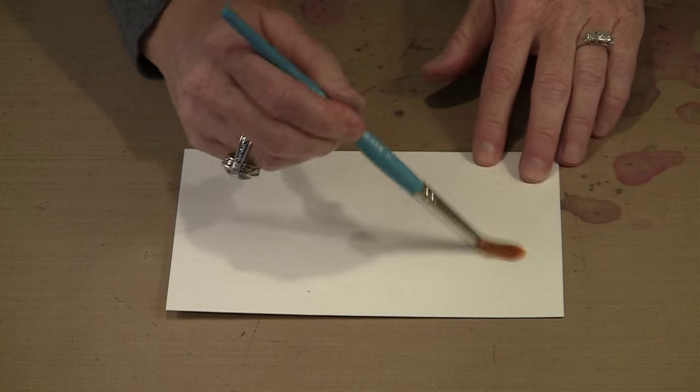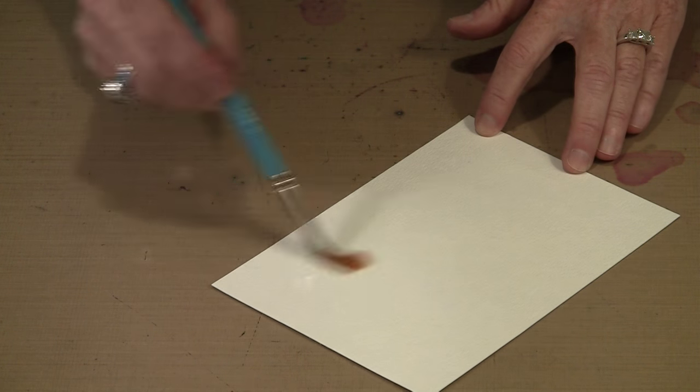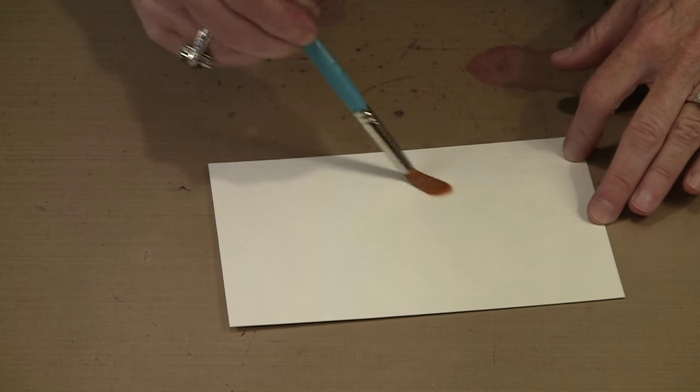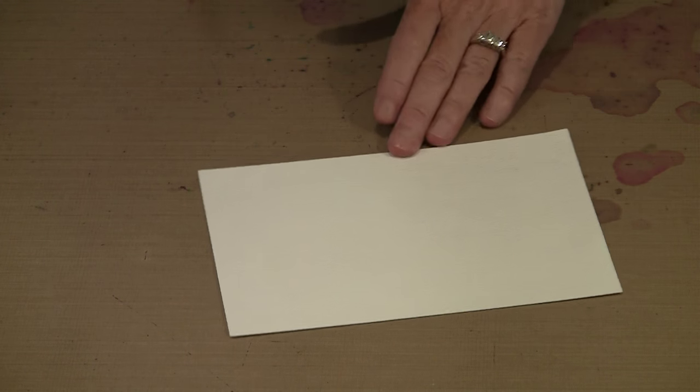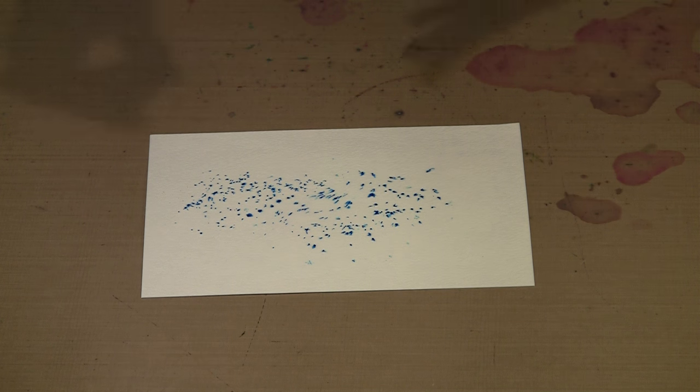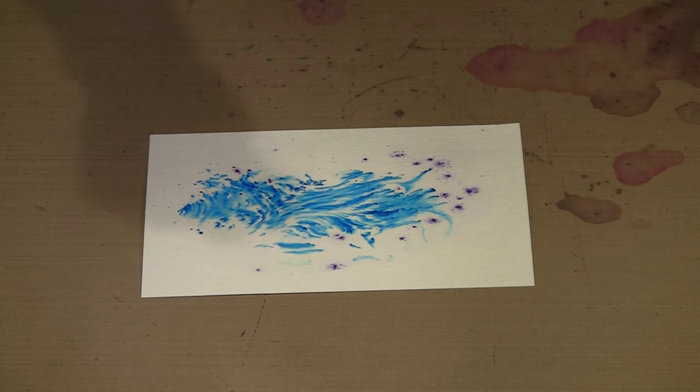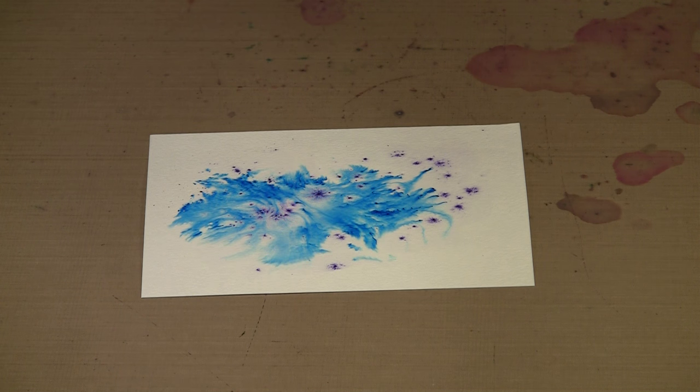I'm using a big number 12 round brush. I could use my mop brush for this if I wanted to. I'm spreading some water out here. You did see a couple of colors pop up because one of those little crystals got someplace, but it pretty much all blended in because it's just one little tiny crystal. So now I'm going to take those same colors and you can see as they hit the water, they immediately start to bloom.